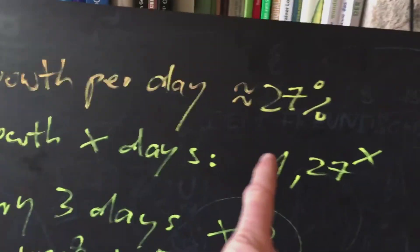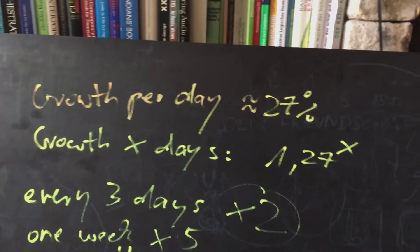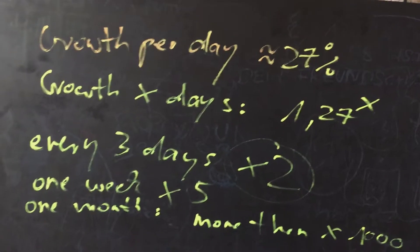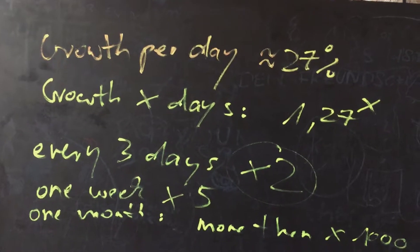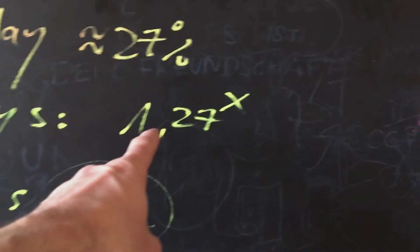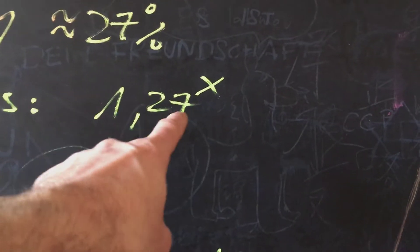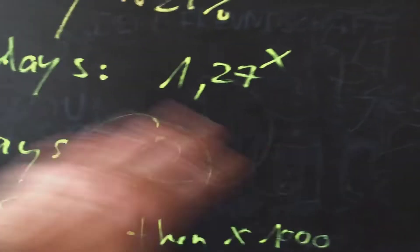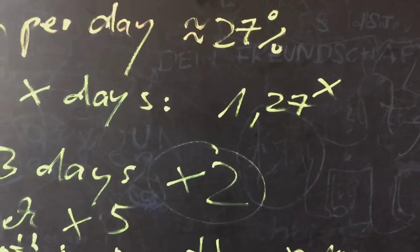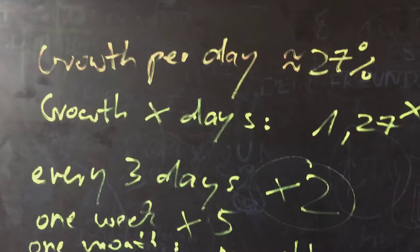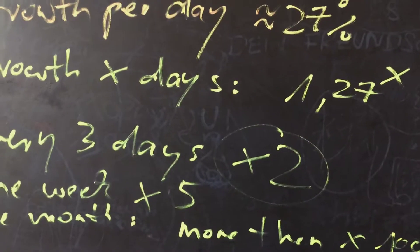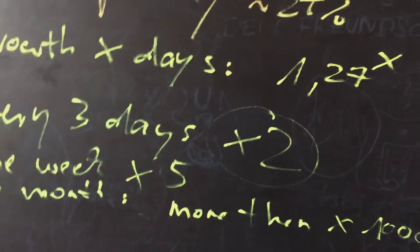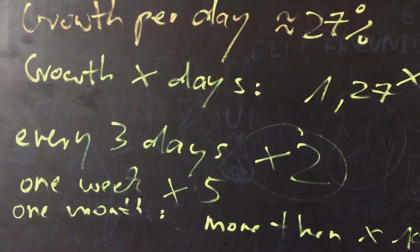So 27 percent each day. That means if you want to calculate a certain amount of days — like five days, ten days, whatever — how much will it grow, you just type 1.27 to the power of the number of days and you get a number. This is the factor by which the virus grows in that amount of days. For example if you run the number with three, you get approximately two — it doubles every three days.